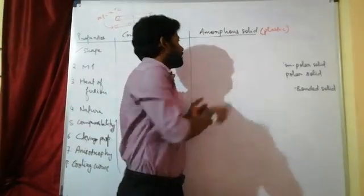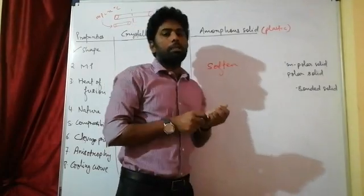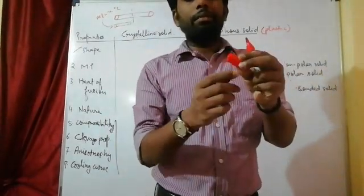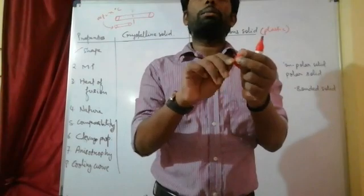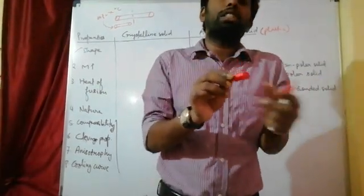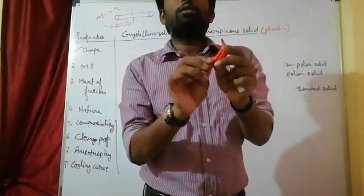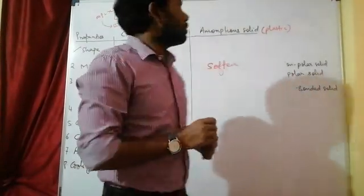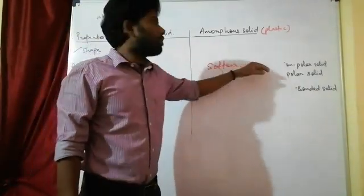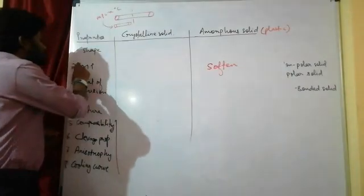When we heat plastic, it does not melt at one fixed temperature; it starts to become soft gradually and continues to soften until it melts. So amorphous solids do not have a fixed melting point — they soften over a range of temperature. That covers points one and two.